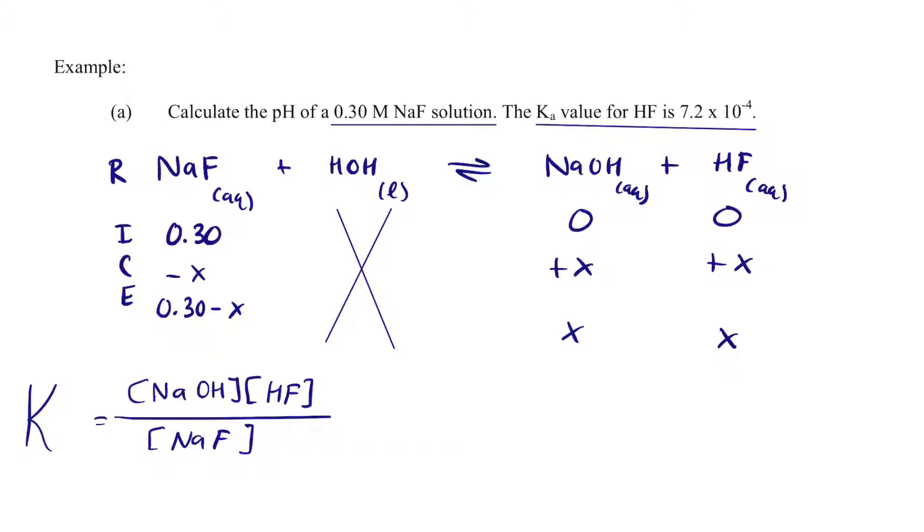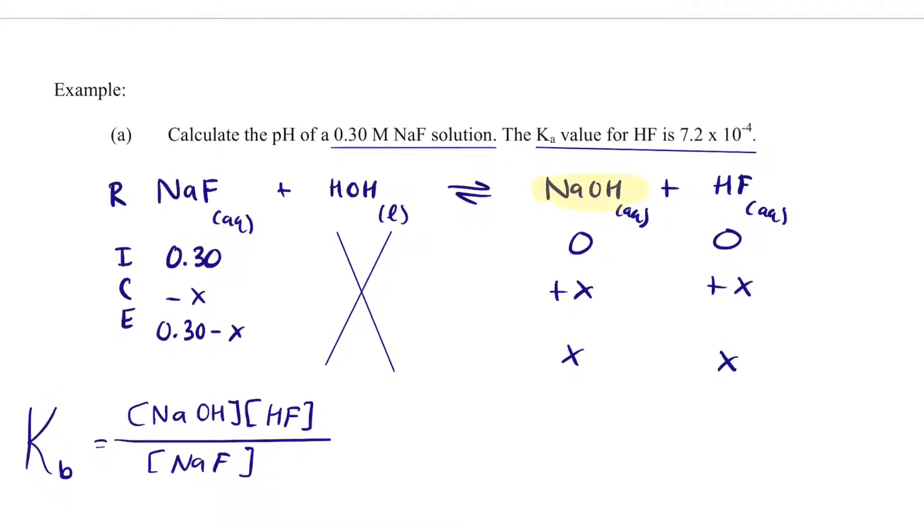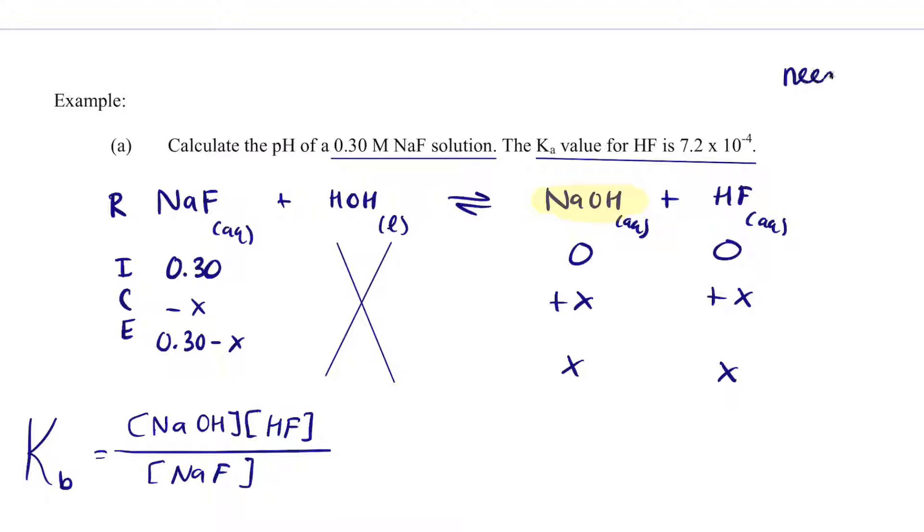And then I get a K expression, and K is equal to NaOH or hydroxide HF divided by NaF. And so the K that they give us, they give us a Ka, but if I look at my equilibrium expression or my reaction, I produce hydroxide. I don't actually produce H⁺, so I need to use Kb because hydroxide is produced.